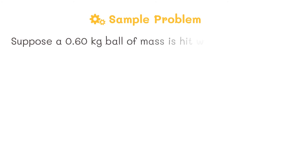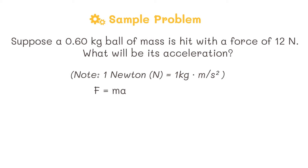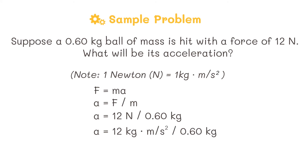Let's have another example. This time, we're going to compute for the acceleration of a 0.60 kilogram ball hit with a force of 12 Newtons. Using the formula force equals mass times acceleration, we rearrange to get acceleration equals force divided by mass. Dividing 12 Newtons by 0.60 kilograms — noting that a Newton is equivalent to kilogram meter per second squared — we can cancel out the unit kilogram, which leaves us with meters per second squared. 12 divided by 0.60 equals 20 meters per second squared.